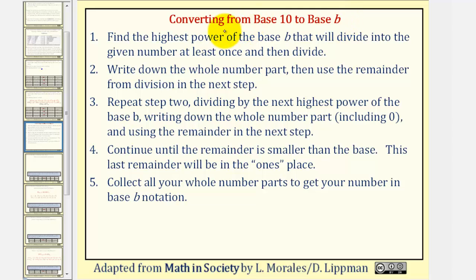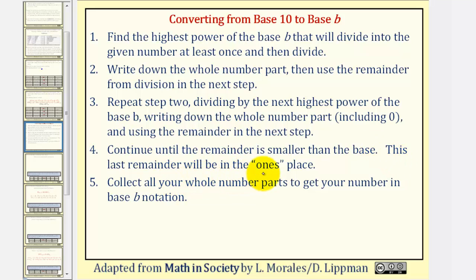For the remainder method to convert base 10 to base B: Step 1, find the highest power of the base that will divide into the given number at least once, then divide. Step 2, write down the whole number part, then use the remainder in the next step. Step 3, repeat step 2 dividing by the next highest power of base B, writing down the whole number part including 0, and using the remainder in the next step. Step 4, continue until the remainder is smaller than the base — this last remainder will be the 1's place. Step 5, collect all your whole number parts to get the number in base B notation.